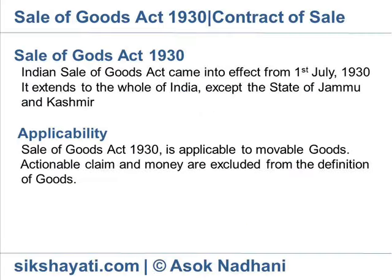Sale of Goods Act, 1930. Initially, the Sale of Goods Act, 1930, was part of the Indian Contract Act in Chapter 8, Section 76-123. Later, these sections in the Contract Act were deleted and the Indian Sale of Goods Act was enacted in 1930. The Indian Sale of Goods Act came into effect from 1st July, 1930.